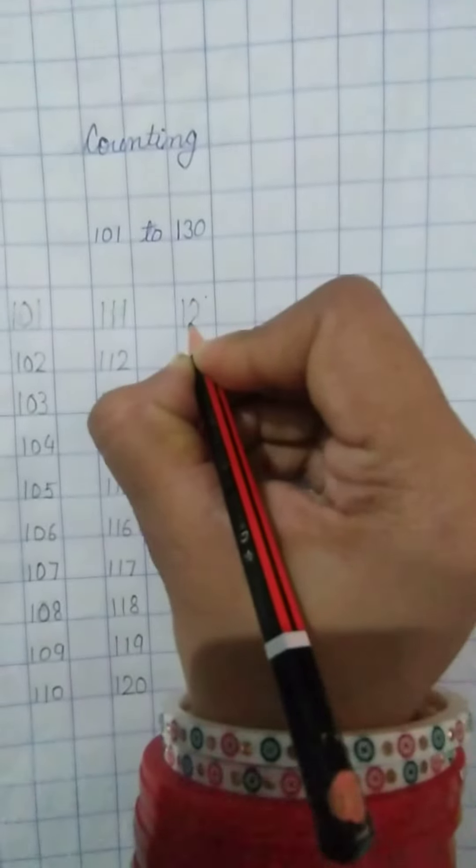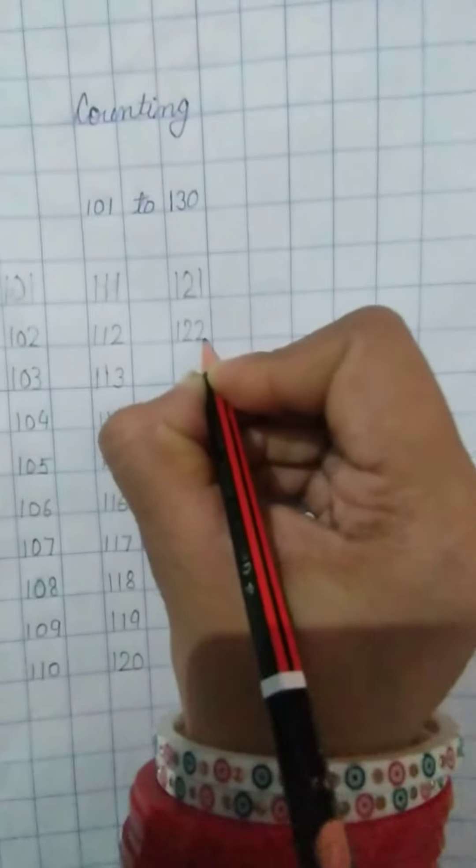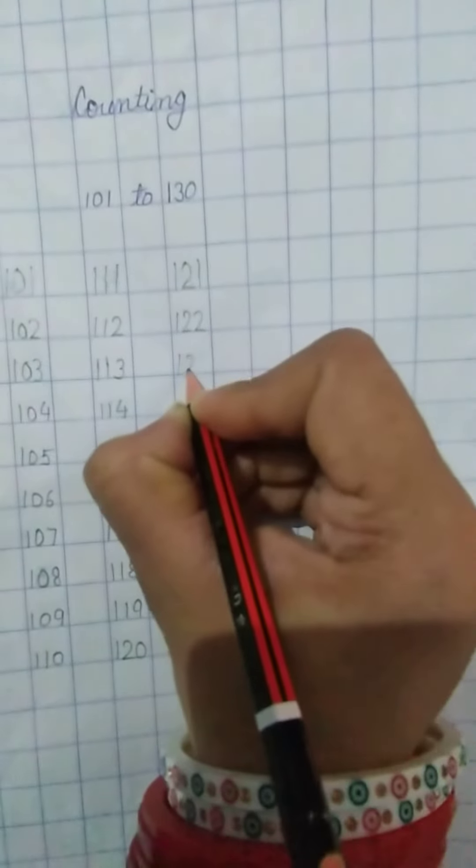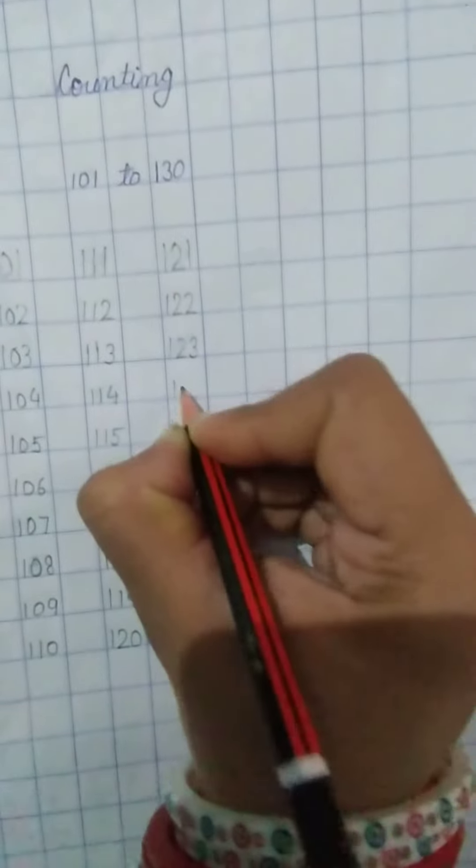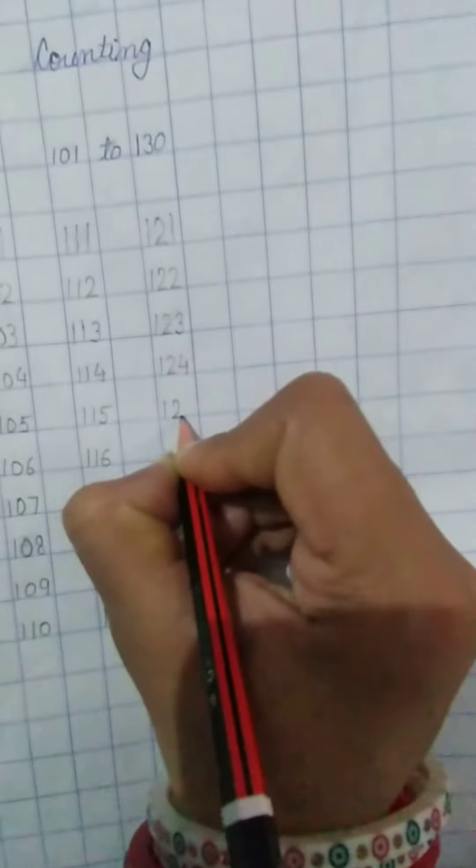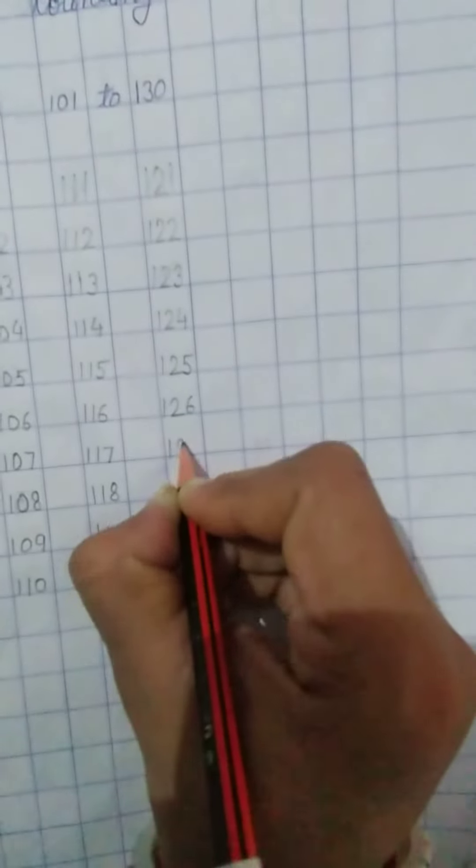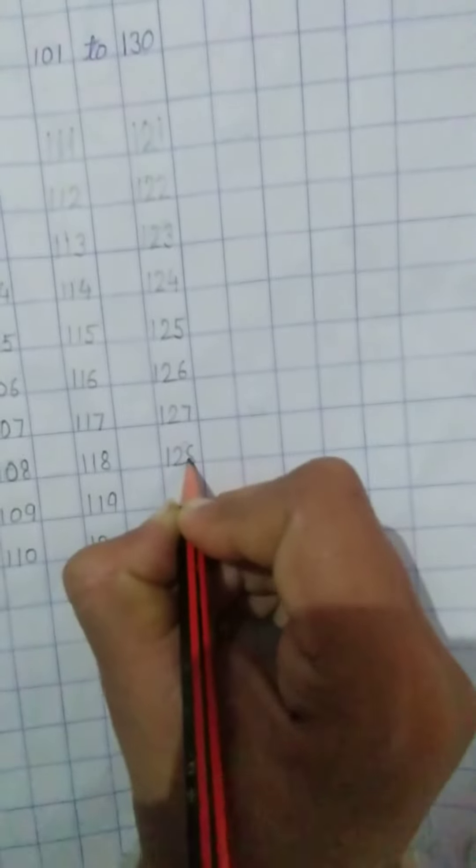Next veta, 121, 122, 123, 124, 125, 126, 127, 128, 129, 130.